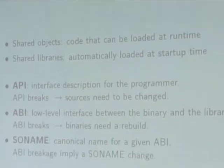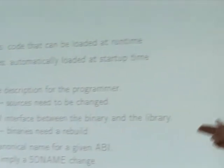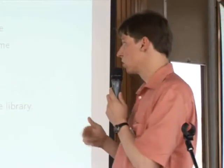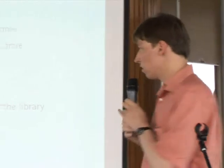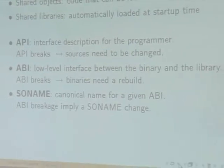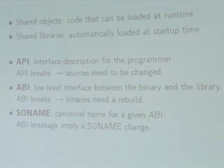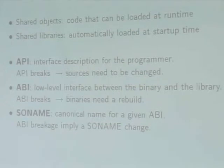A library is defined by its application programming interface, which is used by the programmer — what is in the source code, the definition of functions, how to use them, what are the semantics. The ABI, or binary interface, is a lower-level interface which depends on the operating system. When it breaks, it means only binaries need a rebuild, because this is the interface between the binaries and the library. The ABI is defined by the soname, which is a canonical name that defines a specific API for a library.